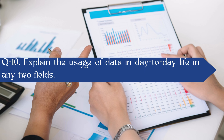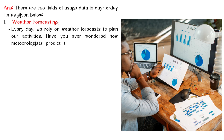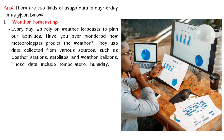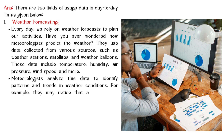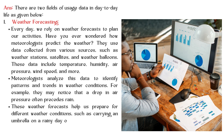Explain the usage of data in day-to-day life in any two fields. Weather Forecasting: every day we rely on weather forecasts to plan our activities. Meteorologists use data collected from weather stations, satellites, and weather balloons — including temperature, humidity, air pressure, and wind speed — to identify patterns and trends in weather conditions. For example, they may notice that a drop in air pressure often precedes rain, helping us prepare by carrying an umbrella or wearing sunscreen.